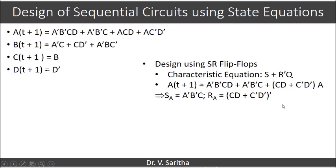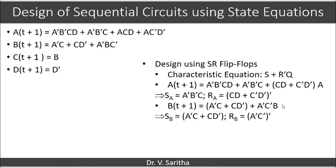So, here we say SA is A'B'C and RA is (CD + C'D')'. In the case of B(t+1), SB is A'C + CD', RB is (A'C')'.